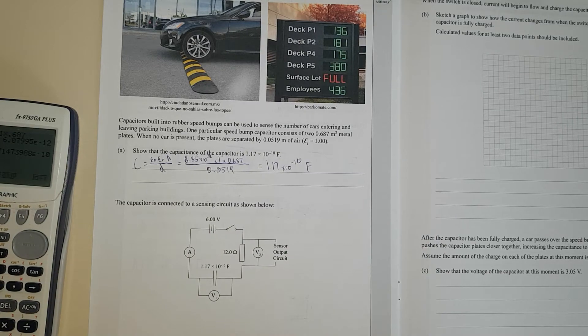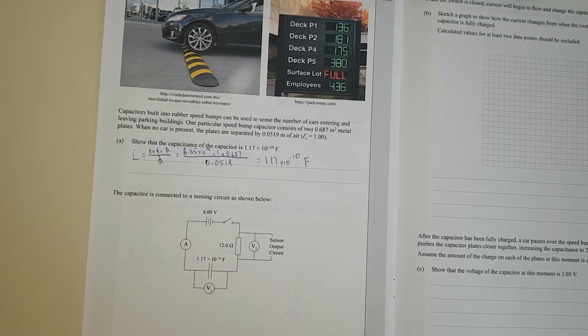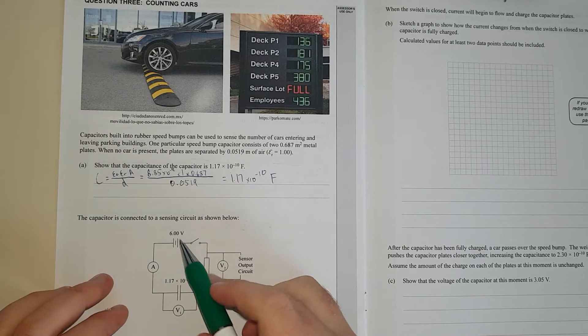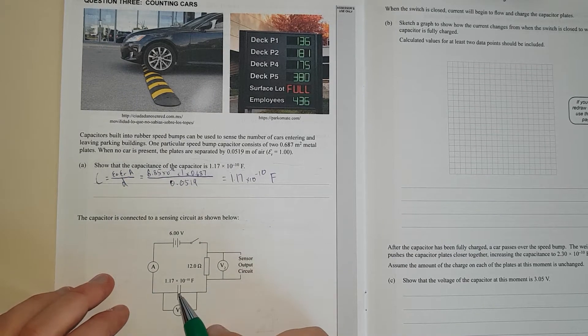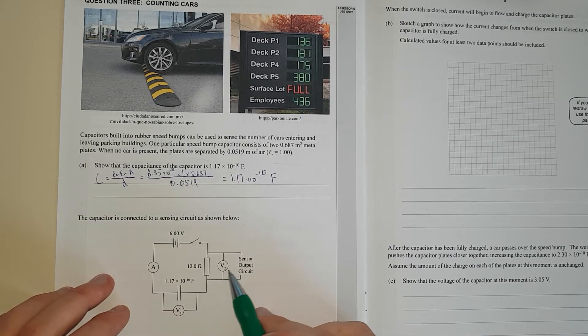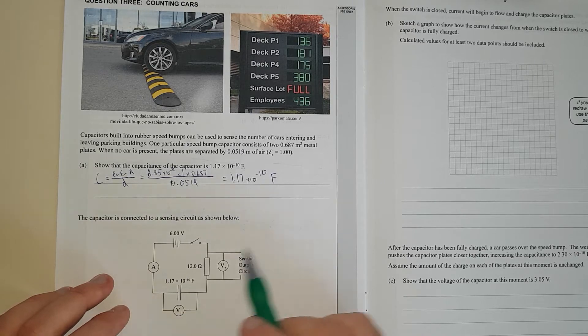And that all equals 1.17 times 10 to the negative 10 which is what it says. So it equals 1.17 times 10 to the negative 10 farads because they are the units for capacitance. Right. Capacitors connected in a sensing circuit below. So we've got a simple series circuit, a resistor, a capacitor and we've just got a voltage reader there and a voltage reader there. And this is going to be just current there.